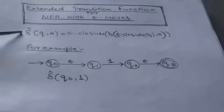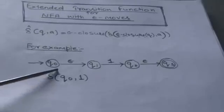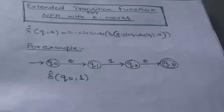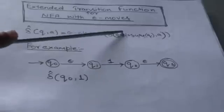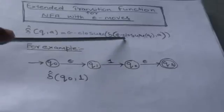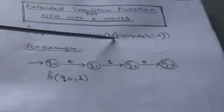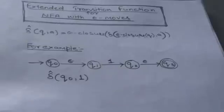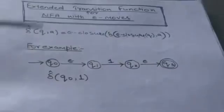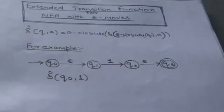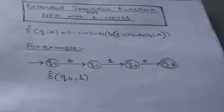Suppose the machine is in state q0 and the input symbol is 'a'. To find the output of the extended transition function, first we have to find the epsilon closure of the current state q. Then we find the transition of that output set for input symbol 'a'. Then whatever output we get, we find the epsilon closure of that set.